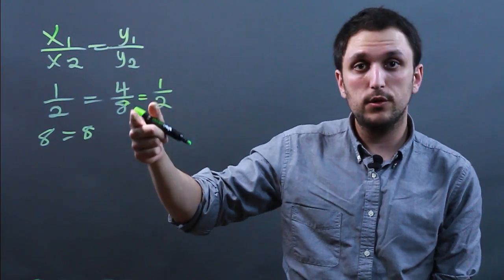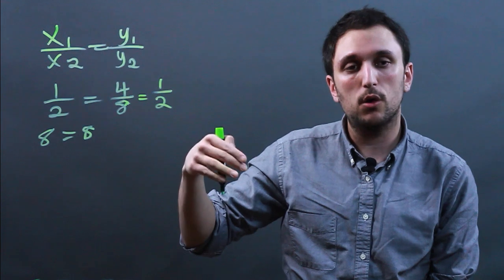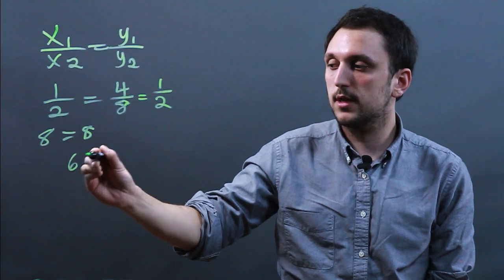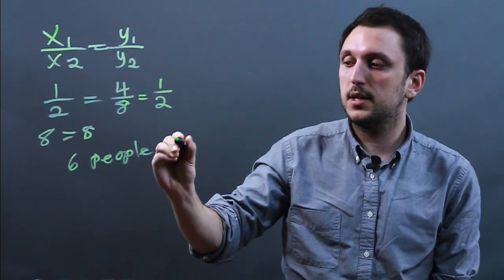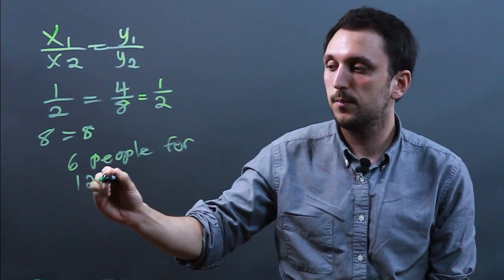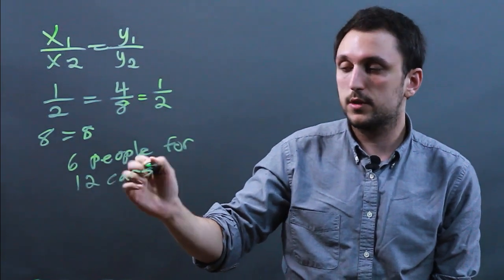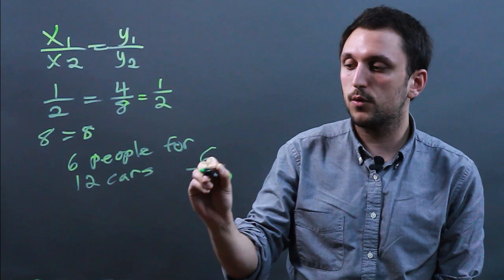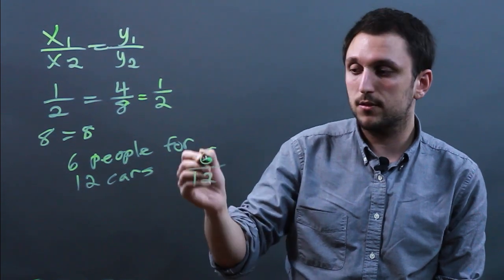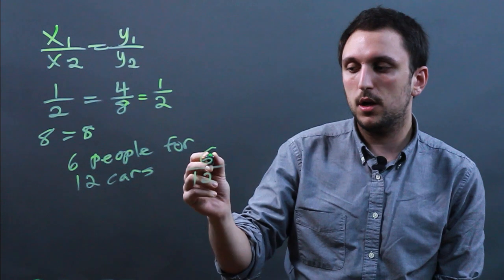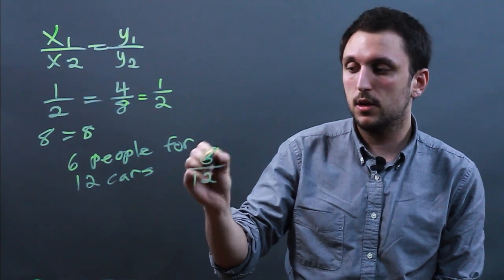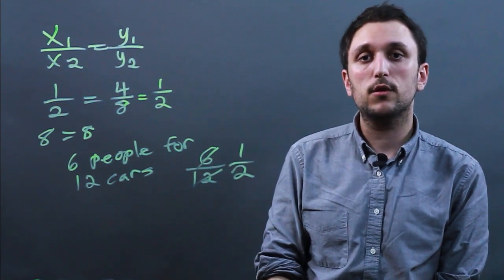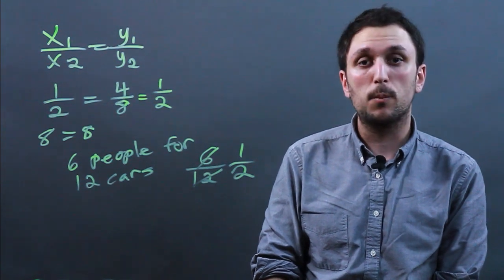The only time you can reduce a proportion is if both numbers are reducible by the same number. So let's say we have the proportion of 6 people for 12 cars. This can also be called a ratio, but when we set this up as a proportion — 6 over 12 — we can say they are proportional, but they're both divisible by 6. So we can divide each by 6 and we get 1 over 2. I'm Charlie Kesov, and you just learned how to reduce proportions.